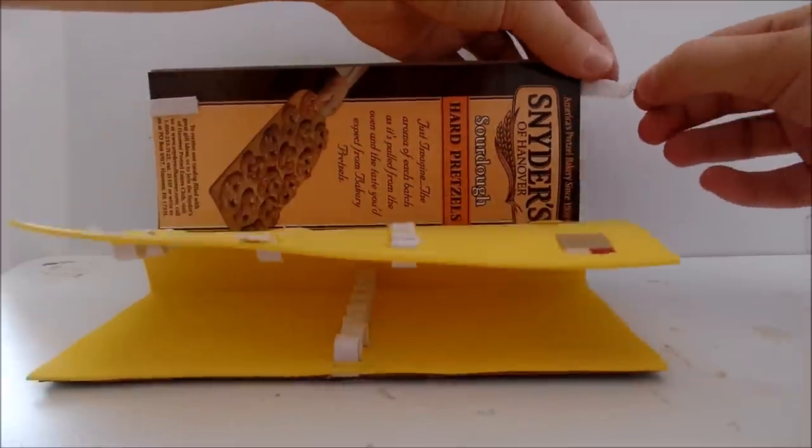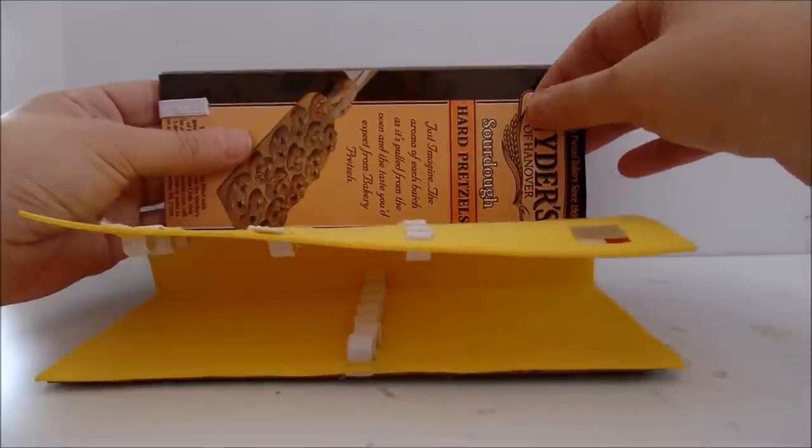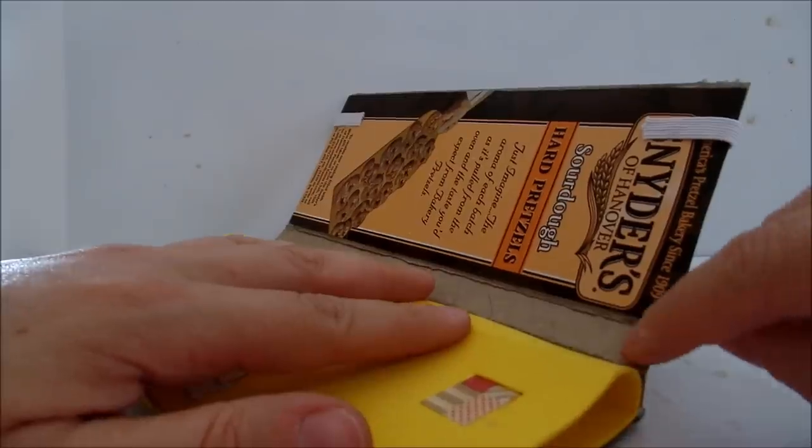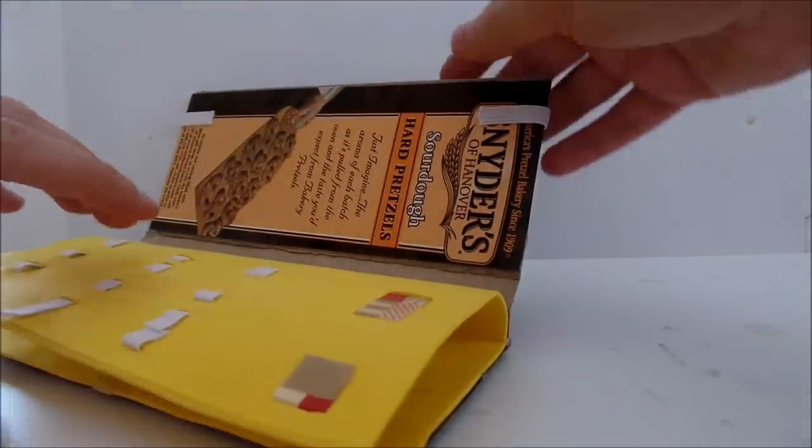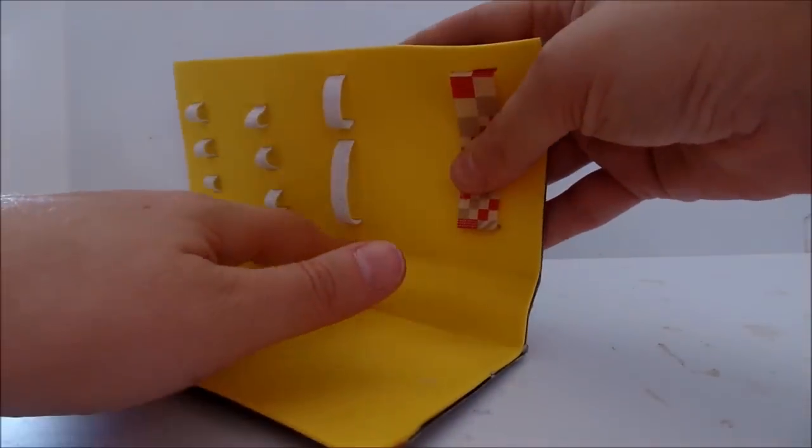Glue the elastic and then glue the foam paper here on the sides and then continue gluing it on the other side.